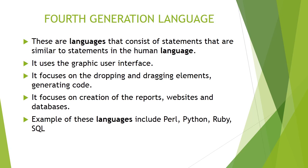The fourth generation language: these are languages that consist of statements similar to statements in human language. They use a graphical user interface and focus on dropping and dragging elements to generate code rather than writing it manually. There are visual tools that a programmer can drag and drop directly into code. They focus on the creation of reports, websites and databases. Examples are Perl, Python, Ruby and SQL. All these generation languages are used in computers so that we can write, read a program, or get work done by the computer.